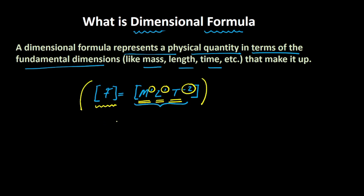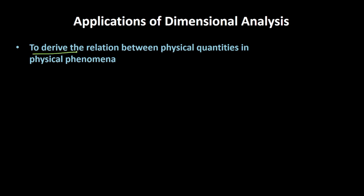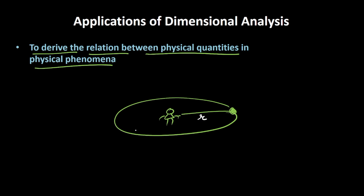In this video, we will learn how dimensional analysis can help us do real-life problems. Particularly, we will focus on deriving the relationship between physical quantities in a physical phenomenon. For example, consider standing and holding a thread with a ball attached, making it move in circular motion. Here R is the radius, V is the velocity, F is the force, and M is the mass of the ball. We want to find how force is related with velocity, mass, and radius.